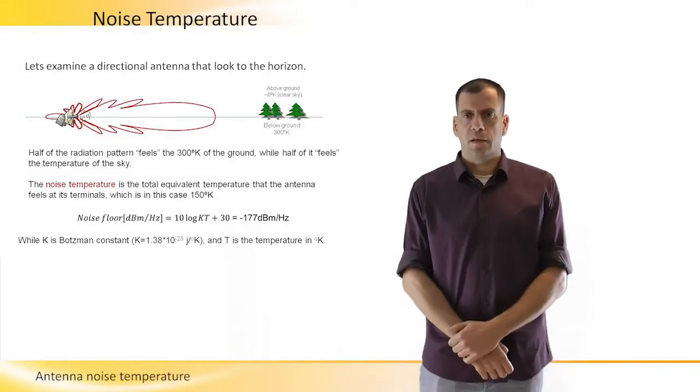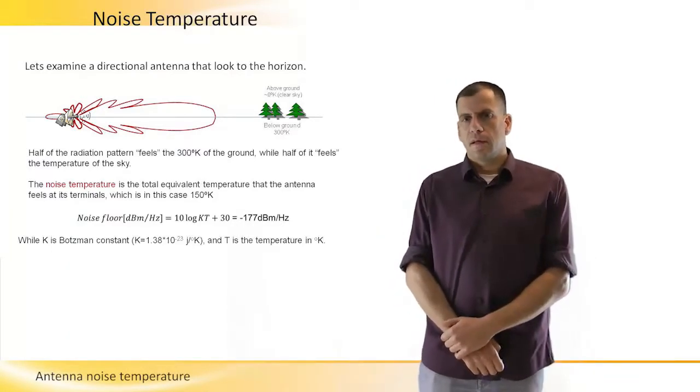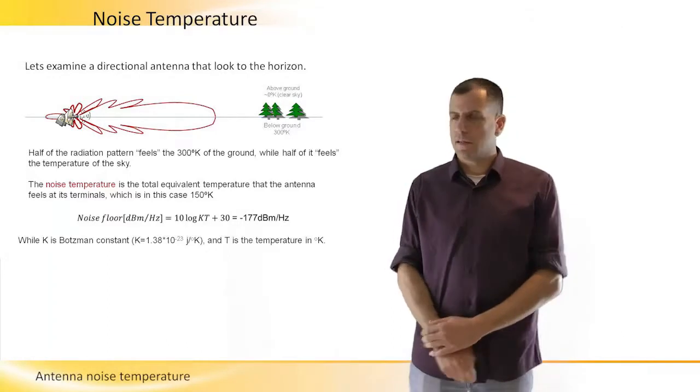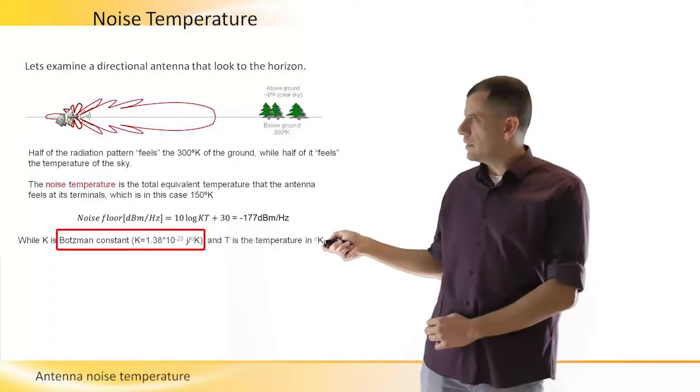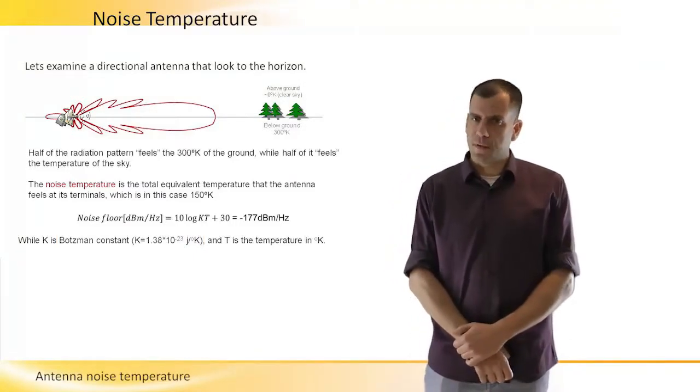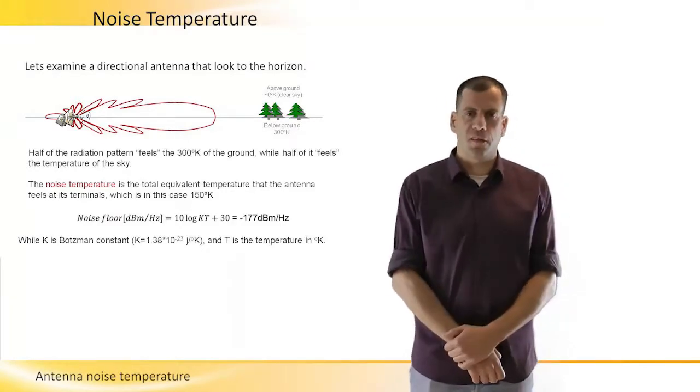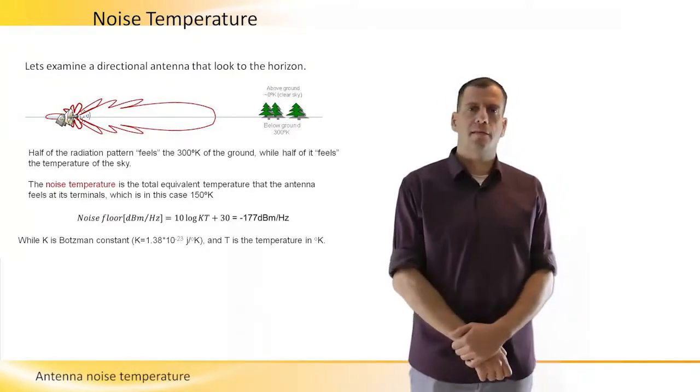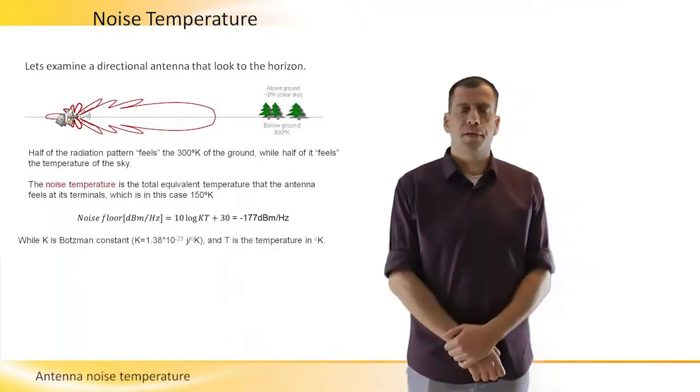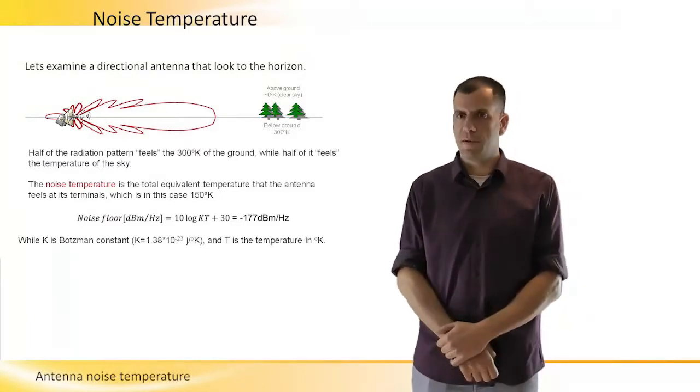In order to calculate the noise, then we have to do 10 log Boltzmann constant, which is here listed, written here in the bottom of the slide, multiplied by the temperature of the antenna, which is in our case 150 degrees Kelvin, and then it yields minus 177 dBm per hertz and not minus 174 dBm per hertz.